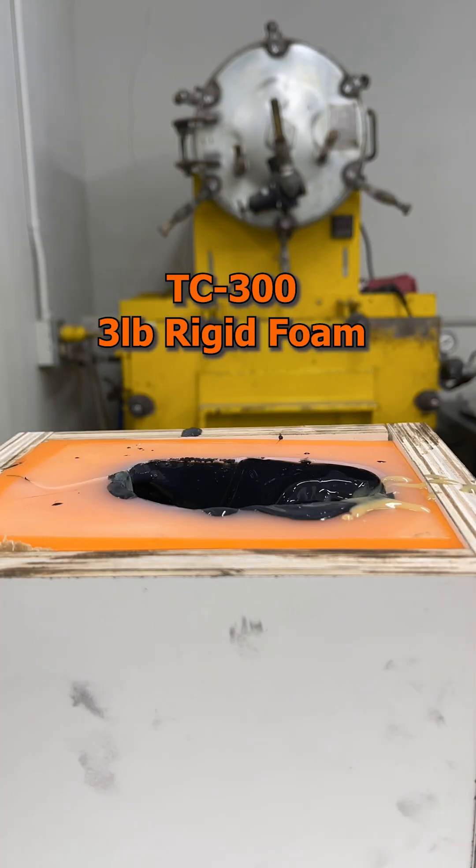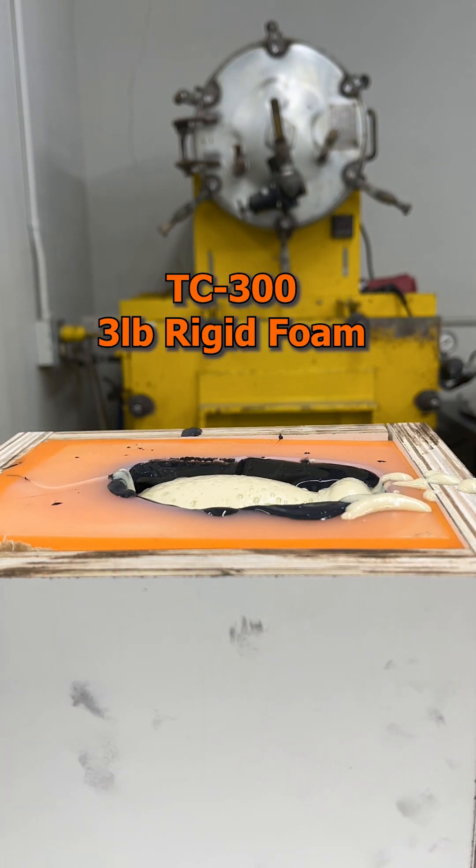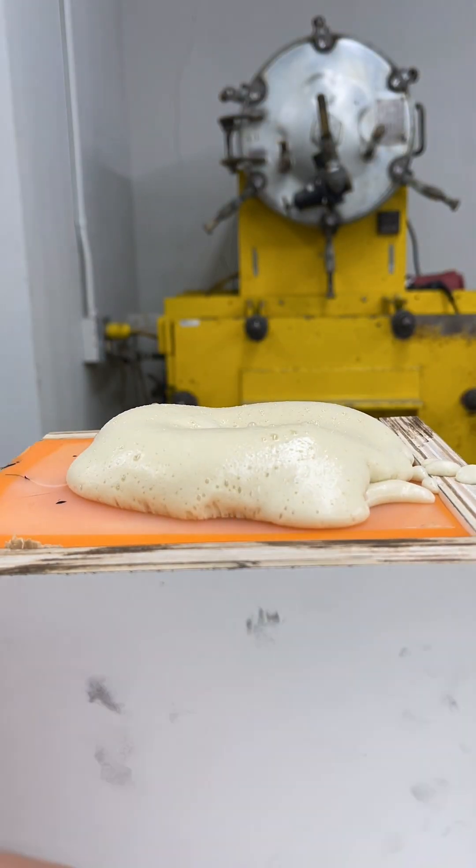Finally, I filled the cast with TC300 3lb rigid foam, making the part lighter without losing durability.